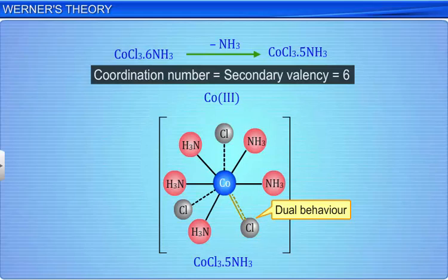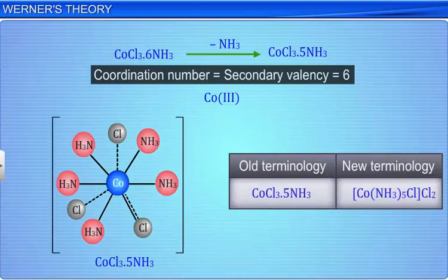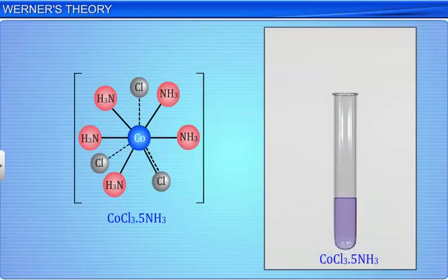In modern terms, the complex can be written as [Co(NH3)5Cl]Cl2. Thus, only 2 of the 3 chloride ions are ionic, and thus only 2 are precipitated as silver chloride with silver nitrate.